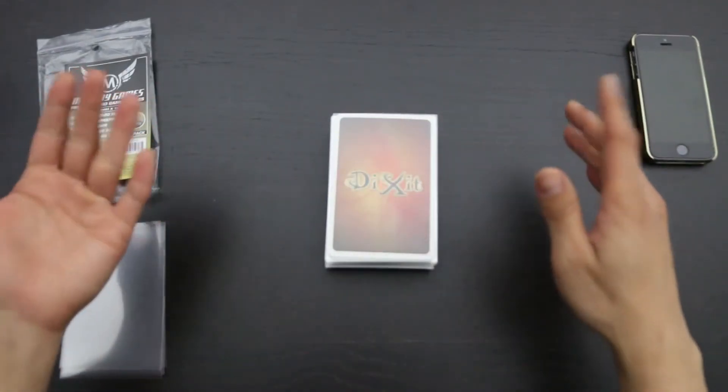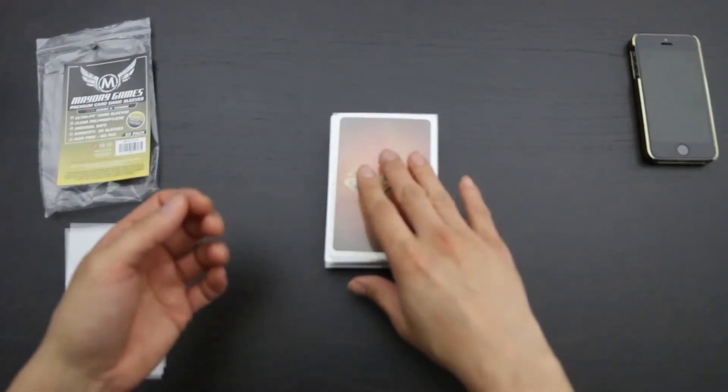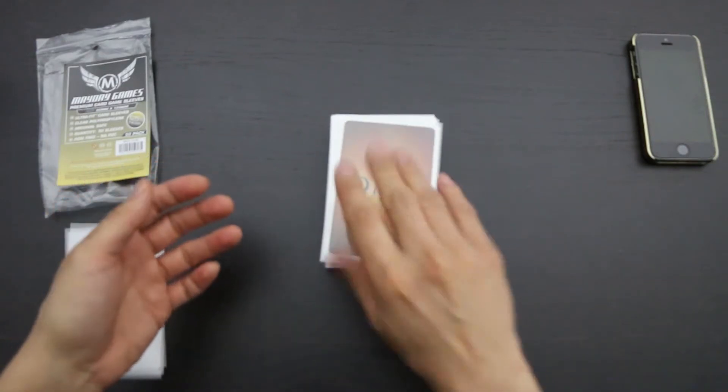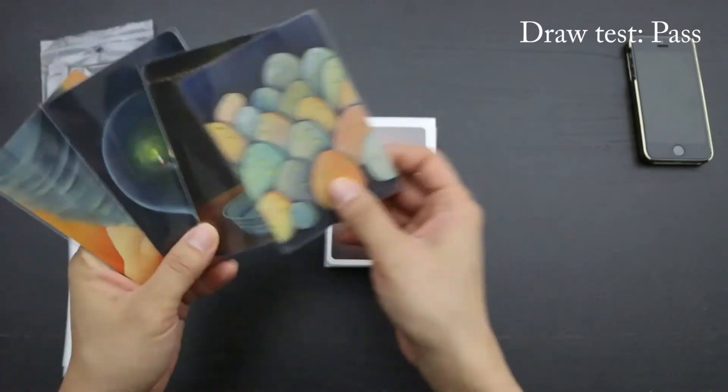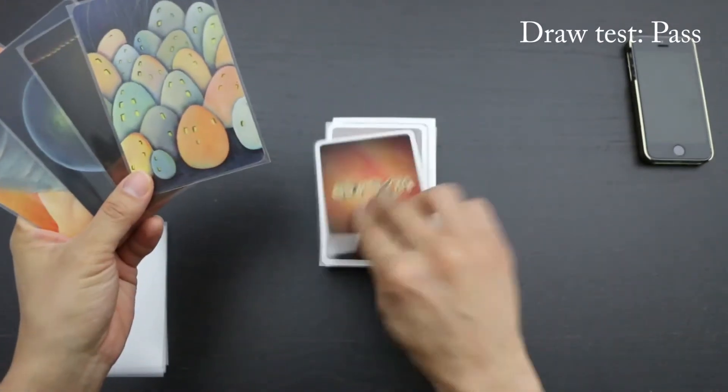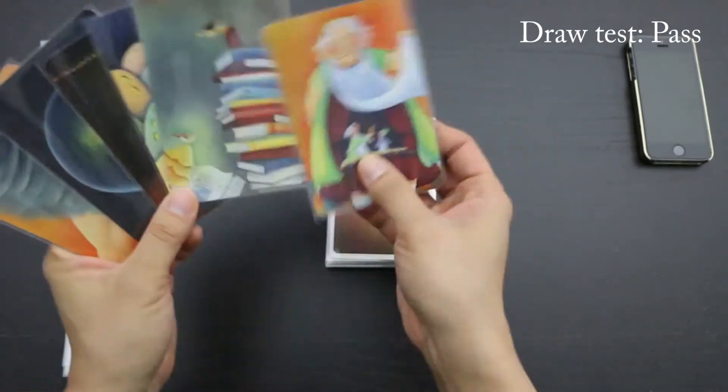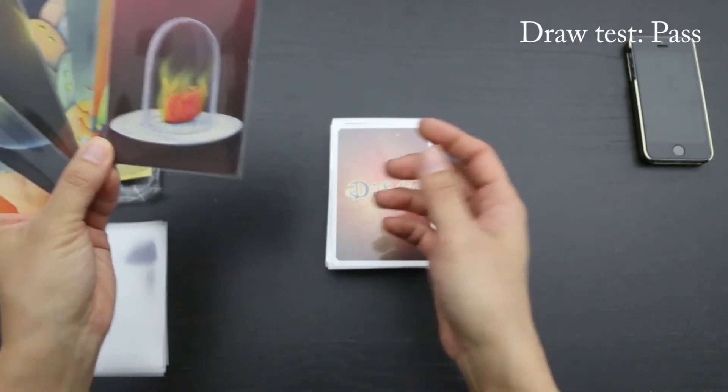Now we'll do the draw test. I'll draw three cards off the top and see how well the deck holds together. Ready, set, go. No problem. The deck held together just fine. As again, it's pretty common for cards of this size. I think that's a pass for the draw test as well.